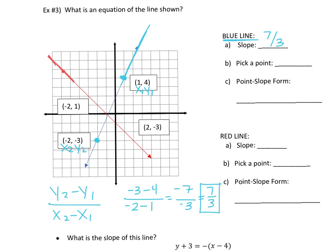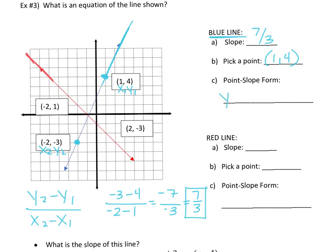Pick a point — I like (1, 4); no need to be negative. Now plug into point-slope form: y − 4 = (7/3)(x − 1). And you're done — that's the equation of the line. Find a point, find a slope, and drop them in.